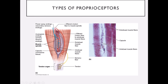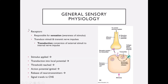Looking at a couple of proprioceptors: we have the tendon organ, which senses how taut or loose the tendon is, giving some indication of how stretched the muscle is. We also have muscle spindles, located between the fibers of skeletal muscle, that sense how stretched the skeletal muscle is. If a muscle is really stretched, that gives the brain information about where the body is positioned versus if the muscle is not stretched.